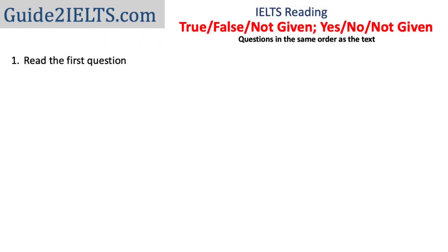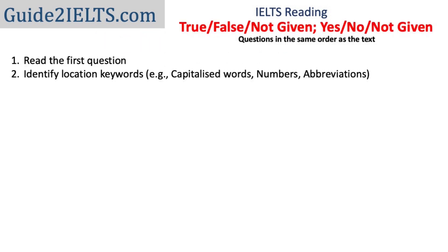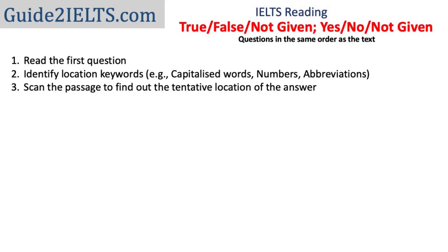So how do you solve these questions? First, read one question. Identify the location keywords. Figuring out the tentative location of the answer in the passage is very important for all question types which have answers in order. Sometimes it helps to start with the second or third question first, if you feel their answers would be easier to locate in the passage. Once you have identified some location keywords, scan the passage.